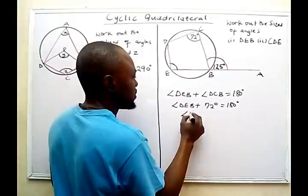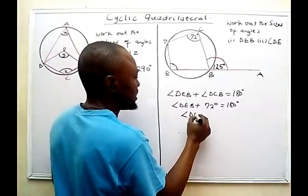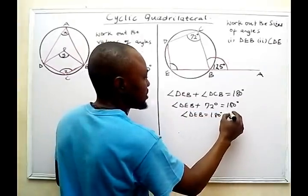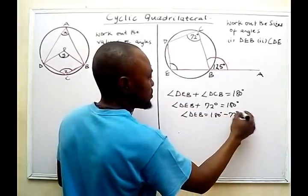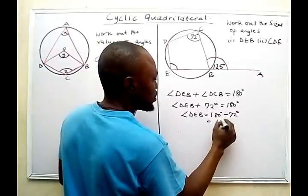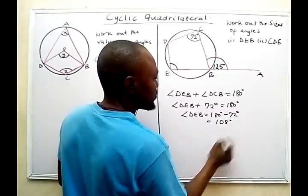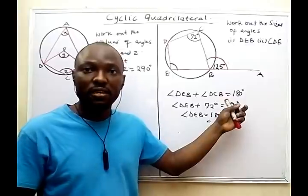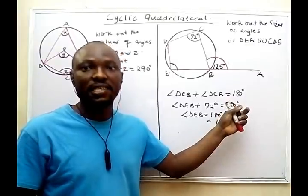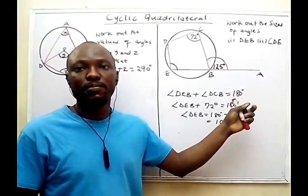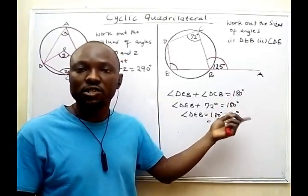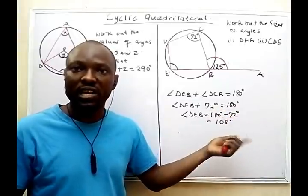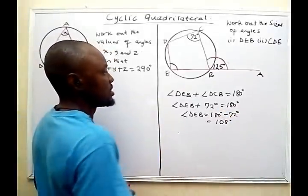So angle DEB will be 180 degrees minus 72 degrees, which gives me 108 degrees. The geometric reason for this is that it is a cyclic quadrilateral — the sum of opposite angles of a cyclic quadrilateral equals 180 degrees.